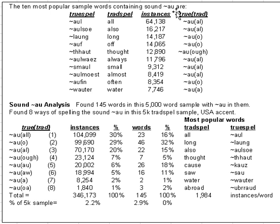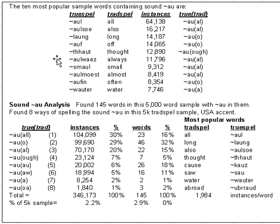Here are the top 10 most popular words containing AWE — that's AWE on True Spell. Number one with 64,000 instances out of a database of 15.4 million instances of words, representing about 90% of words on a page: 'All' is number one, followed by 'Also,' 'Long,' 'Off,' 'Thought,' 'Always,' 'Small,' 'Almost,' 'Often,' and 'Water.'